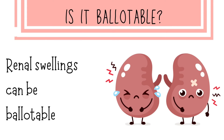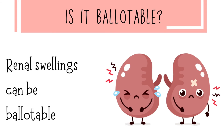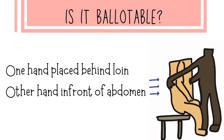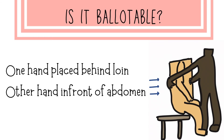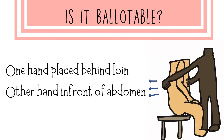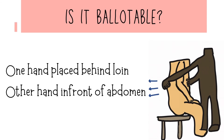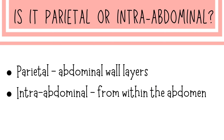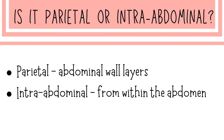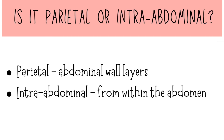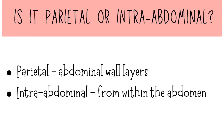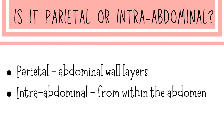Renal swellings can be ballotable. To assess ballotability, place one hand behind the loin of the patient and the other hand in front of the abdomen, then apply pressure in an anteroposterior direction to palpate the renal swelling. We also have to determine if the swelling is parietal in origin — arising from the abdominal wall layers such as muscles — or intra-abdominal, arising from viscera within the abdomen.